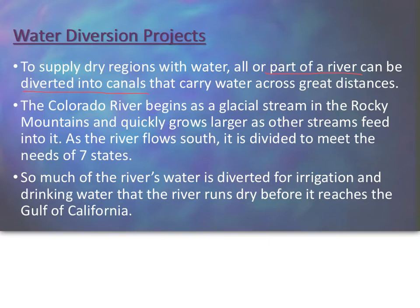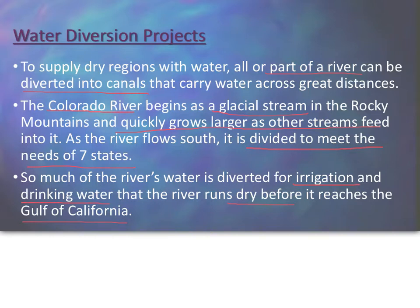We've done the same thing out west with the Colorado River. The Colorado begins as a glacial stream formed by melting ice in the Rocky Mountains and quickly grows large as other streams feed into it. As it flows south, we divide it up to meet the needs of seven states. So much water gets pumped out that by the time it reaches the Gulf of California, it runs dry — and we are having serious water problems in California as a result.